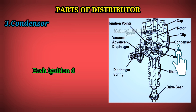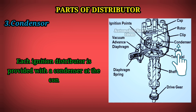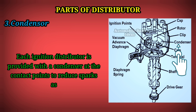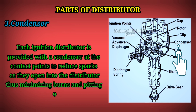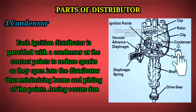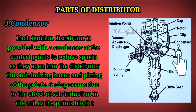3. Condenser: Each ignition distributor is provided with a condenser at the contact points to reduce sparks as they open into the distributor, thus minimizing burns and pitting of the points. Arcing occurs due to the effect of self-induction in the coil as the points block the flow of current.